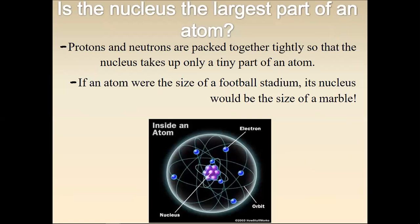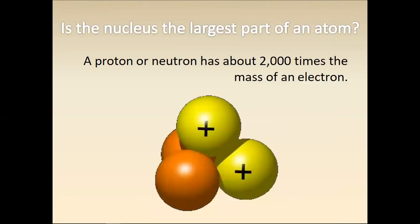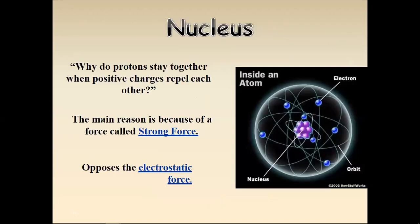Regarding whether the nucleus is the largest part of the atom — protons and neutrons are packed together tightly so the nucleus takes up only a tiny part of the atom. If an atom were the size of a football stadium, its nucleus would be the size of a marble. A proton or neutron has about 2,000 times the mass of an electron.